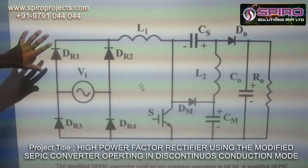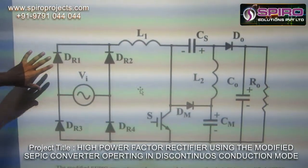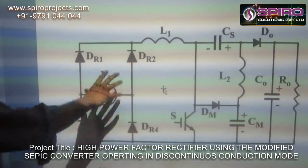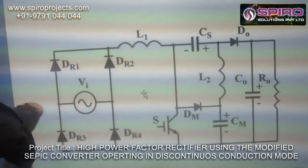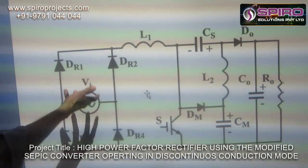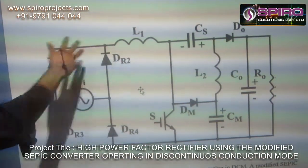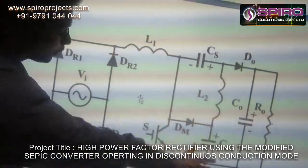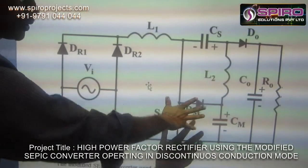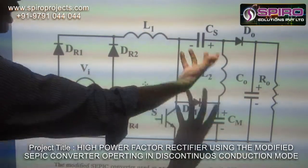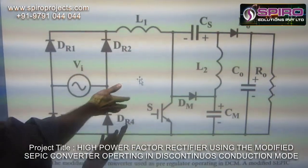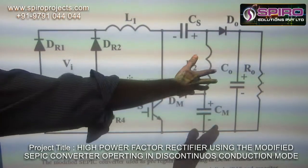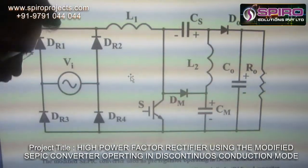This is the block diagram and circuit diagram of our proposed system. It includes the rectifier unit, which rectifies AC power input into DC power output. This is our proposed system, which converts DC power into efficient energy delivered to the load.